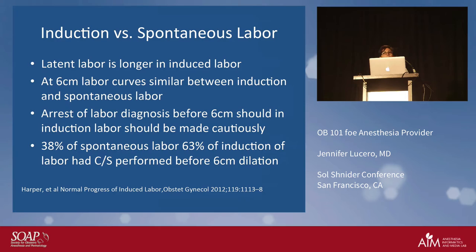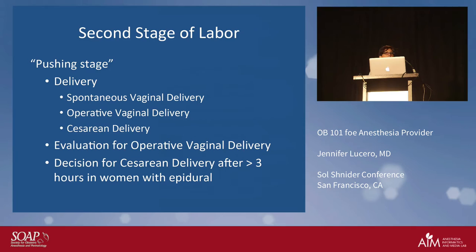Moving on to the second stage of labor — the pushing stage — if someone arrests in the first stage and won't advance in dilation, the option is a C-section. But in the second stage there are a few options: a spontaneous vaginal delivery, an operative vaginal delivery, or a cesarean. Tomorrow I'll go into more detail on how we perform these advanced vaginal deliveries with forceps.